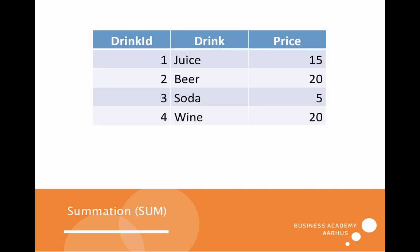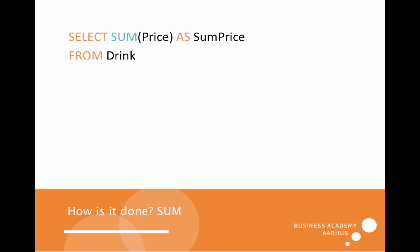We can do the same with summation — add those numbers together, which in this case gives 60. We use the SUM function on the price column, and we output this as the column name 'sum price'. The result is of course 60.